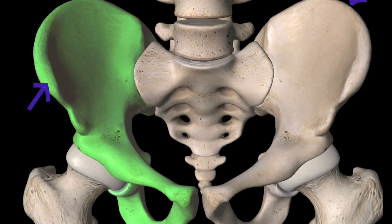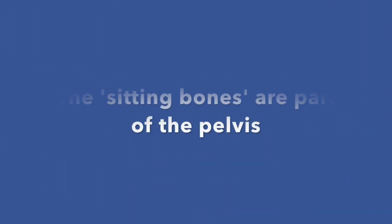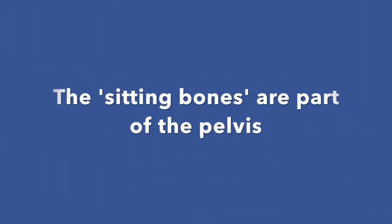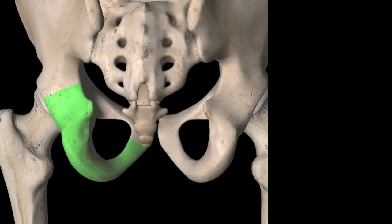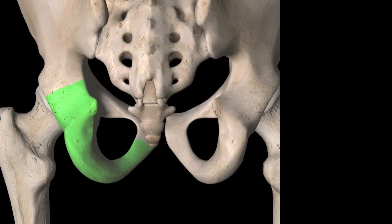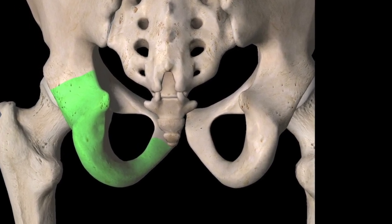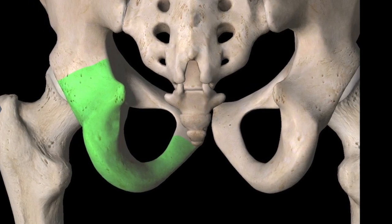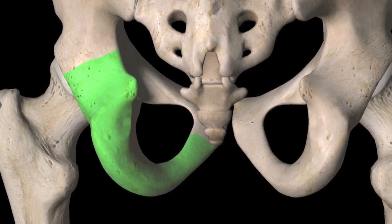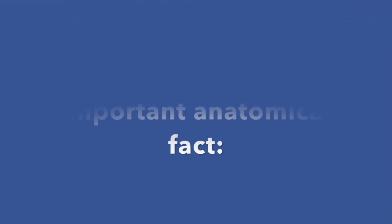The sitting bones are part of the pelvis. Here you can see the seat bone highlighted, and you can see that it's not a bone that is hanging about by itself but actually it's at the very base of the pelvic bone. So we have two seat bones, two pelvic bones, and here is a crucially important anatomical fact.